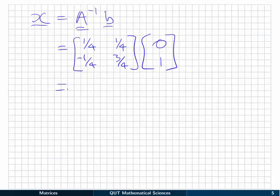To find x, multiply out the matrix. 1/4 times 0 is 0, 1/4 times 1 is 1/4. Bottom row: -1/4 times 0 is 0, 3/4 times 1 is 3/4.